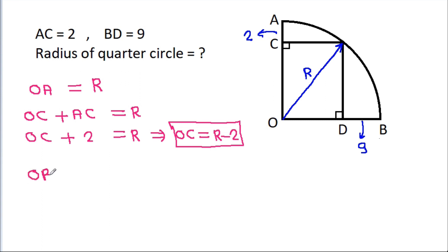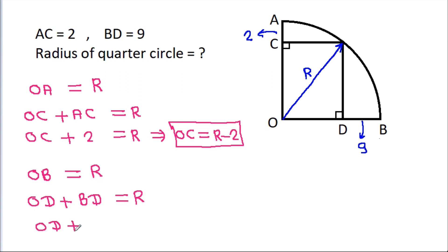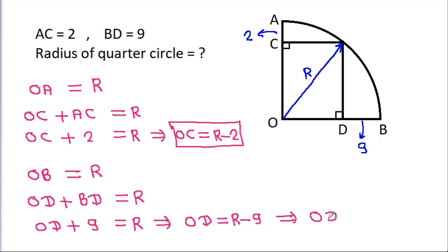And OB will be equal to R, and OB equals OD plus BD. That is R equals OD plus 9, which means OD will be R minus 9. And OD will be equal to CE — suppose this point is E — so CE will be R minus 9.